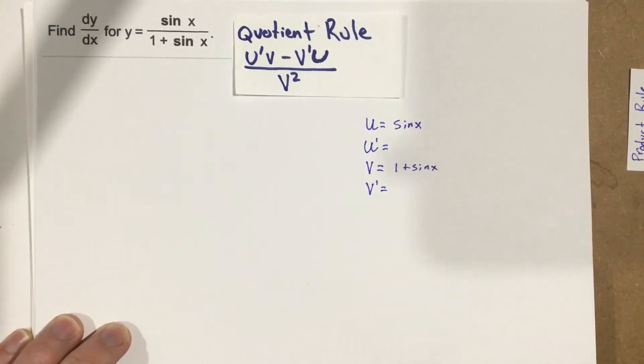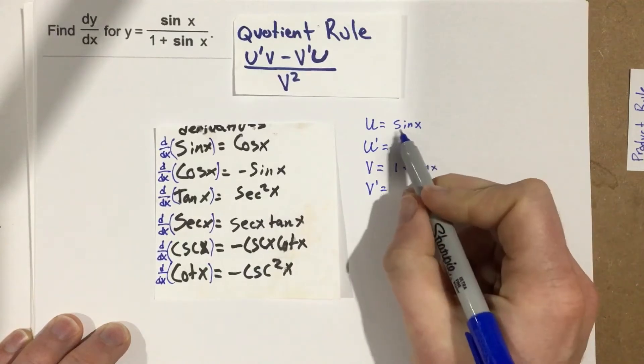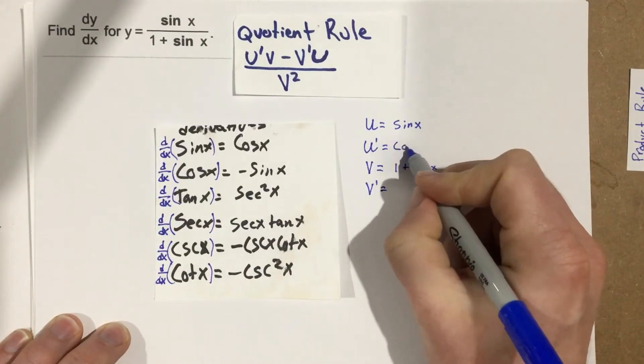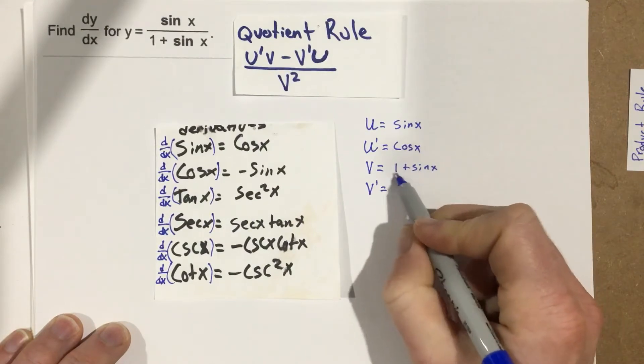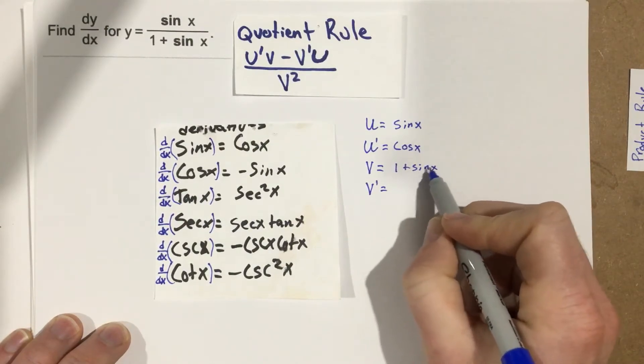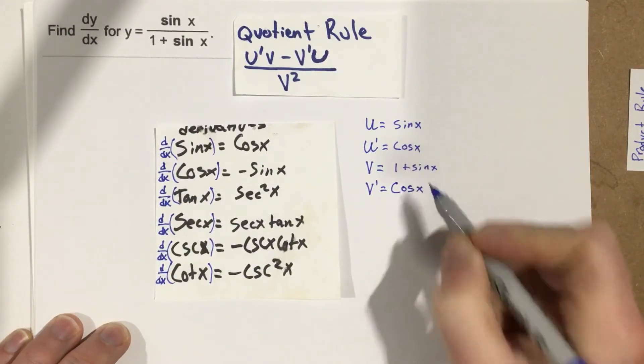And now we need to take the derivatives of each of these. So the derivative of sine is just cosine, so we can say cosine x. And the derivative of 1 plus sine x, well, the derivative of 1 is 0. Derivative of sine x is just cosine x. So actually, both of these functions have the same derivative.